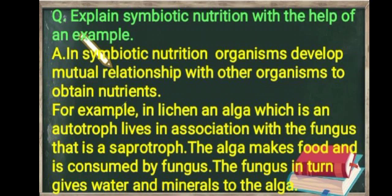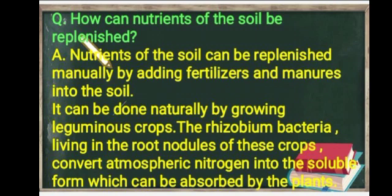The next question: how can nutrients of the soil be replenished? Nutrients of the soil can be replenished manually by adding fertilizers and manures, or naturally by growing leguminous crops. The rhizobium bacteria living in the root nodules of these crops convert atmospheric nitrogen into a soluble form which can be absorbed by the plants.